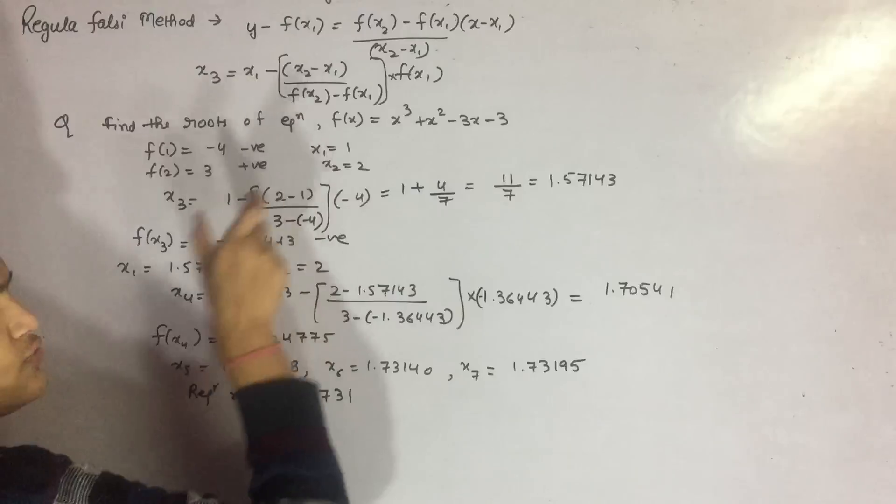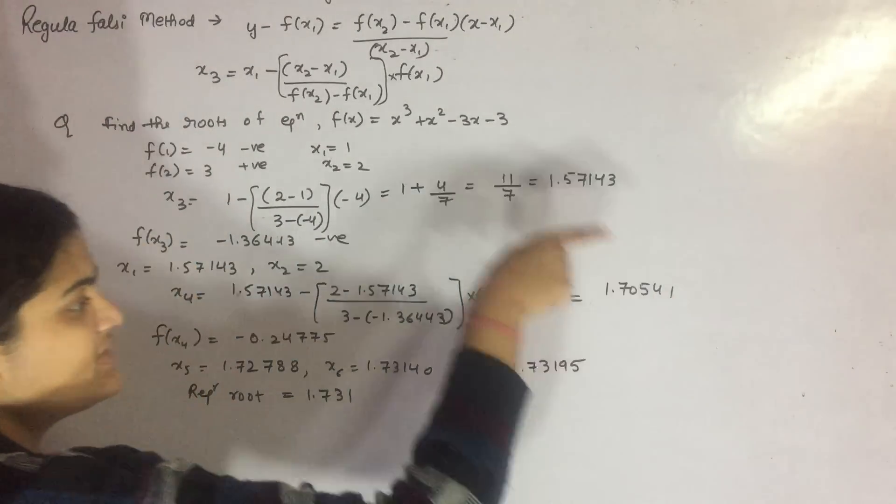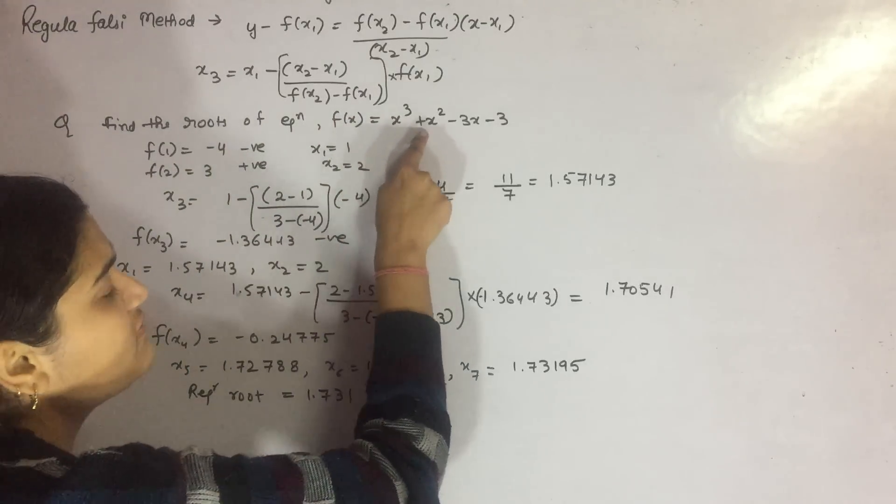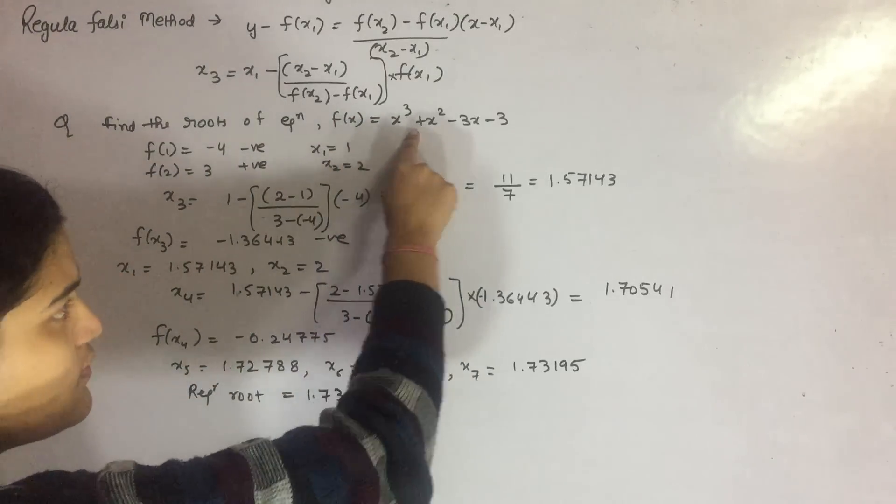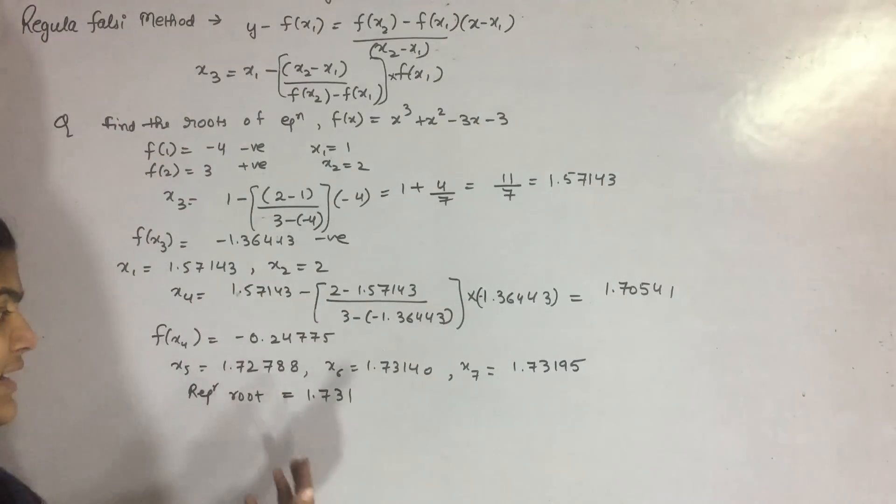Now you have to substitute this value into the function f(x4), which means f(1.70541): 1.70541 cubed plus 1.70541 squared, and so on. You'll find out that your value is negative.